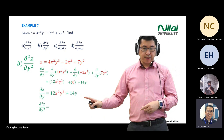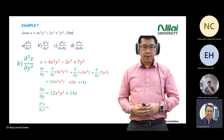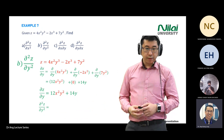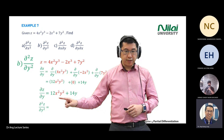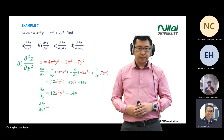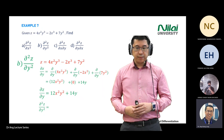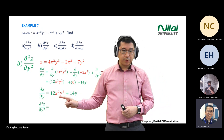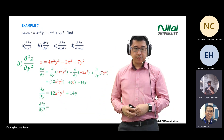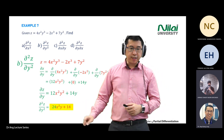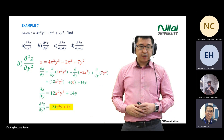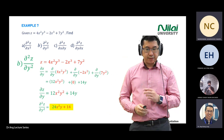So the first partial differential gives del z over del y equals 12x squared y squared plus 14y. Now for the second partial differential, you differentiate one more time over y. You get 24x squared y for the first term and 14 for the second term.